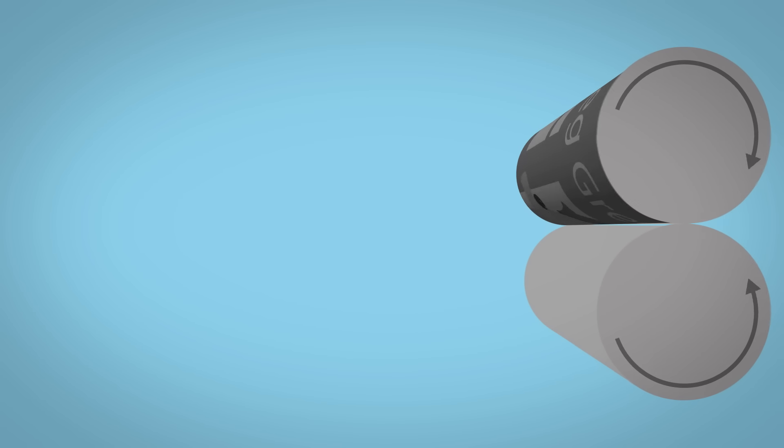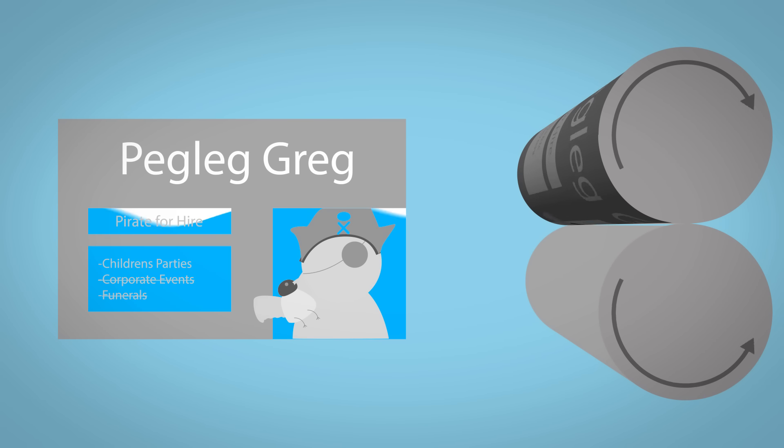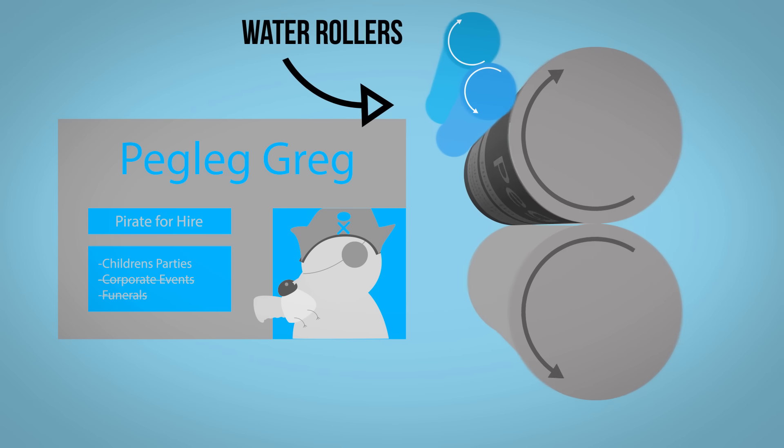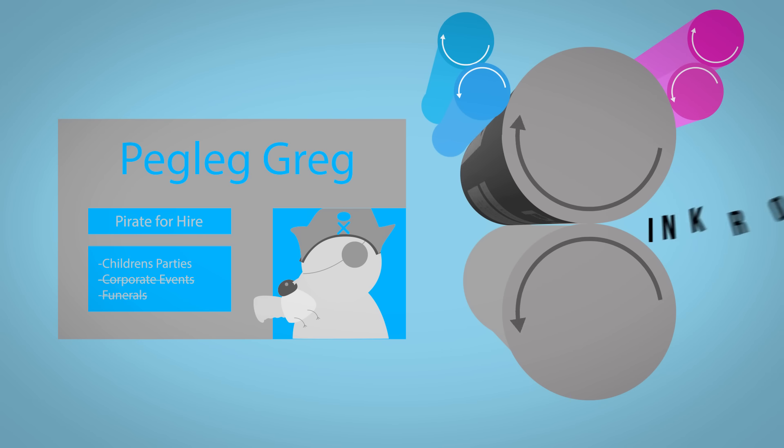Each revolution of this cylinder dampens the non-image area of the plate with water from the dampening system. A vegetable oil based ink is then passed through a series of rollers and finally onto the image area of the plate.